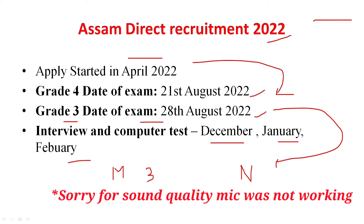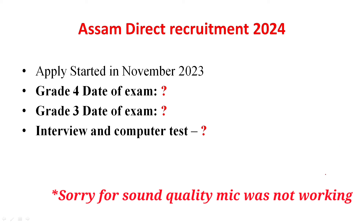When we complete the exam process, we have a result of applying start results. This is basically the result of 2024. 2024 apply start results in November. Apply for the exam in December — we have a result. If you have a result, you can apply for the exam.